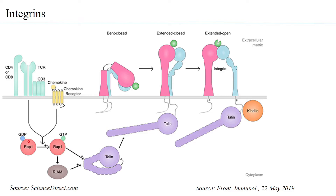Consider an immune cell — a T cell. On the T cell you have CD4 or CD8 and the T cell receptor with the CD3 complex. If the T cell receptor interacts with MHC class 2 or MHC class 1 with an antigenic peptide, it elicits a signal transduction leading to talin going from an inactive state to an extended state. This talin can then bind to the integrin which was in a bent closed state.